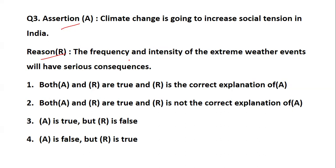We can see the sensitivity of our weather — extreme heat, global warming, irregular seasons, severe monsoons — these fluctuations can have serious consequences. Is it true that social tension increases because of the frequency and intensity of extreme weather events? Yes — both the assertion and the reason are true, and the reason is the correct explanation for the assertion. Social tension will mount, and the reason is this extreme weather sensitivity.